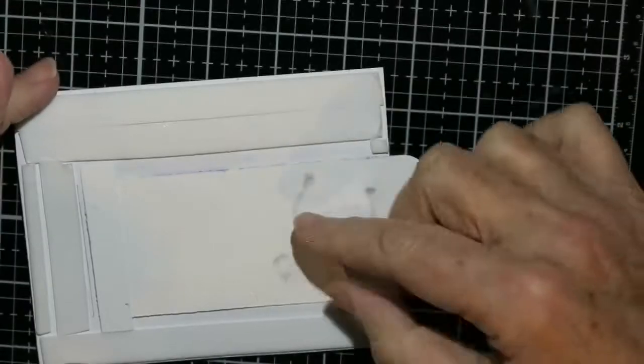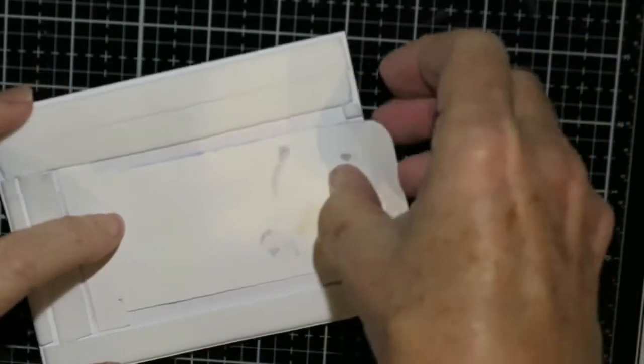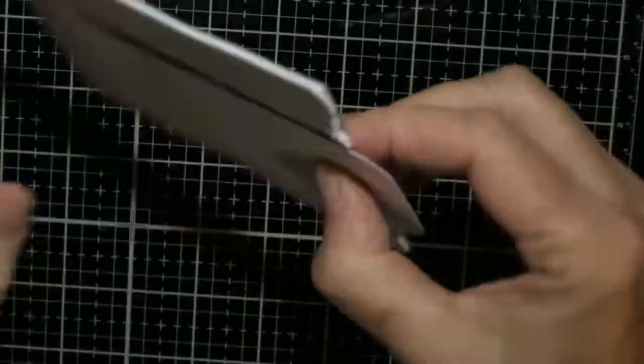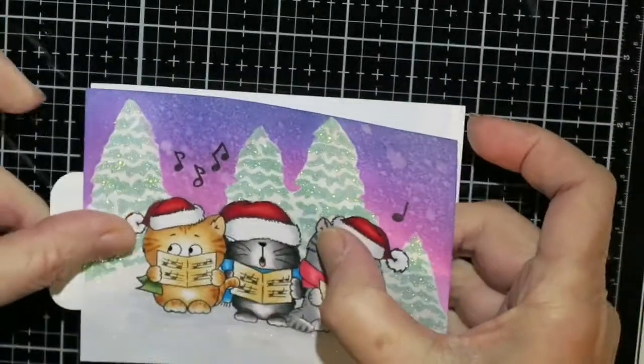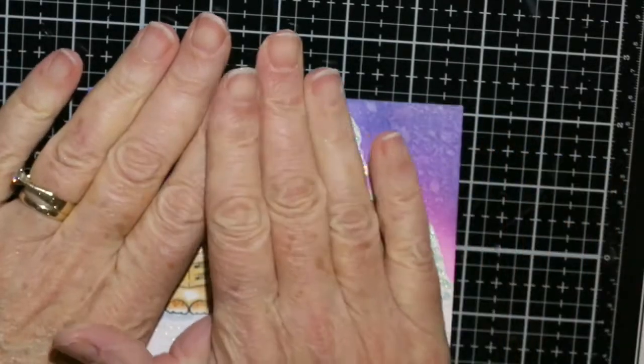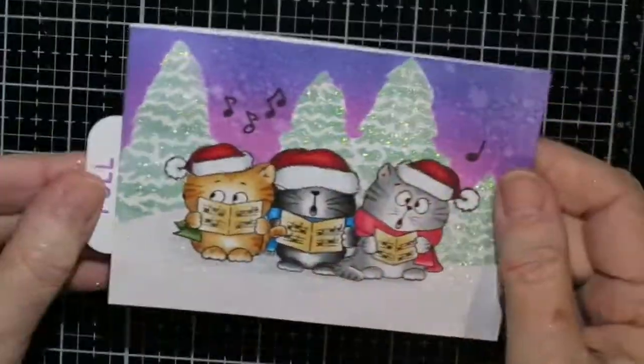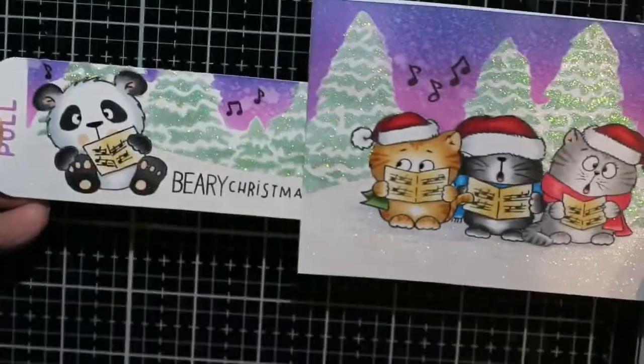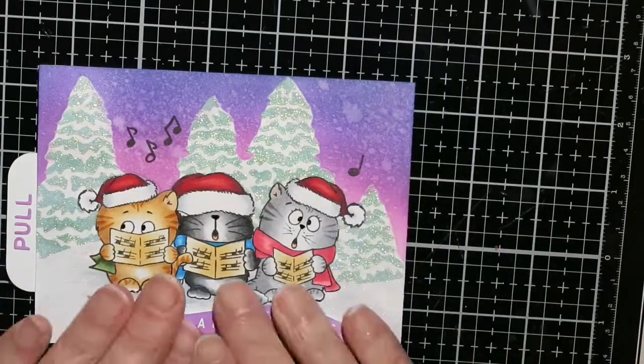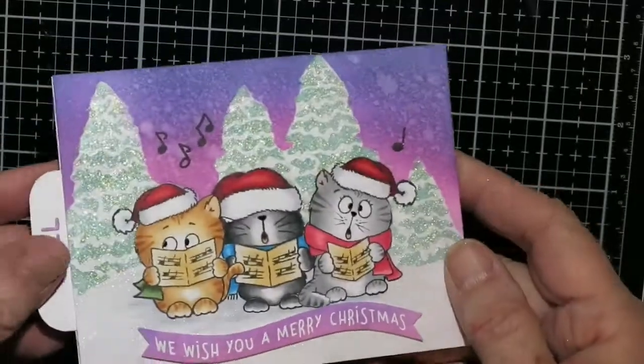Now, here I've removed the release paper from the foam tape. And I am just positioning that tab where I want it to go. Holding everything in place. And then I'm going to stick it to my card front. And there you go. And that's all there is to that. It just moves in and out really easily. I just adhered the sentiment to the front of it. And that is a caroling panda.